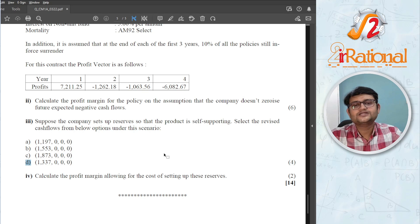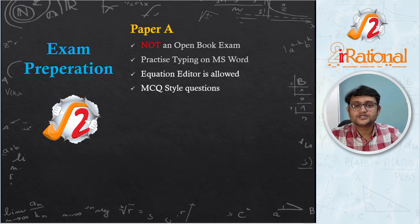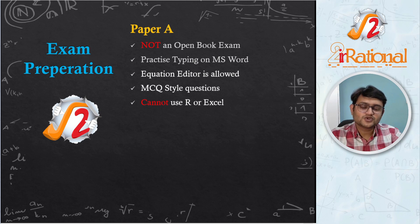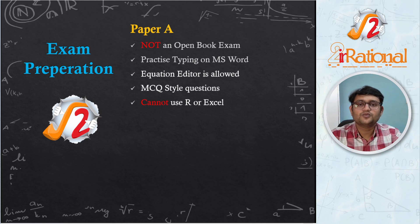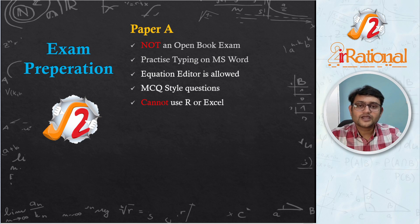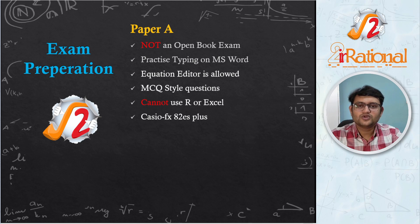This is the pattern you will likely see in other examinations as well. For better understanding, check the March 2022 exam paper. Students also ask whether they can use Excel or R programming for calculations in Paper A — you cannot. The exam software will not allow you to open any other software, so you cannot open R Studio or Excel during Paper A. All calculations must be done using your calculator. The recommended calculator is the Casio FX 82 ES+, and you can check other allowed calculators on the IAI website.